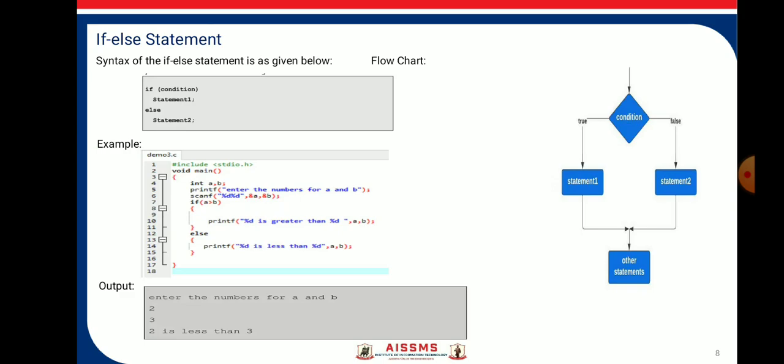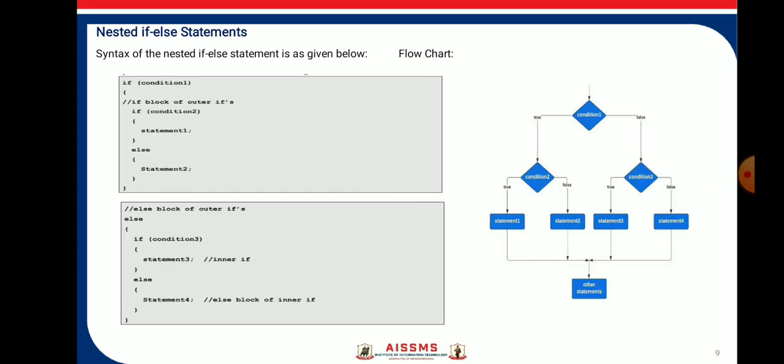Next is the nested if statement. The nested if statement consists of another if or else inside it. If the outer if condition is true, the outer if block is executed, which contains another inner if. If the inner if condition is true, the statement under the inner if block is executed; else the statement of the inner else block is executed.